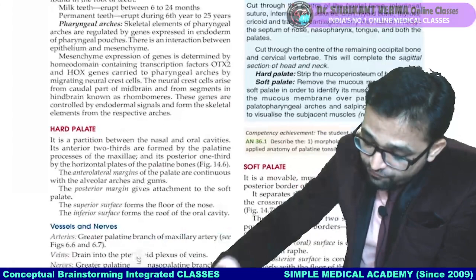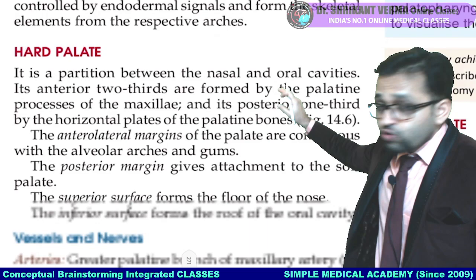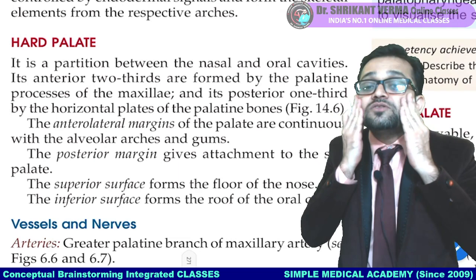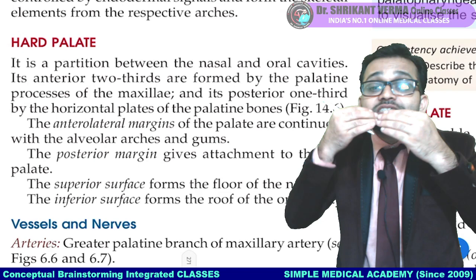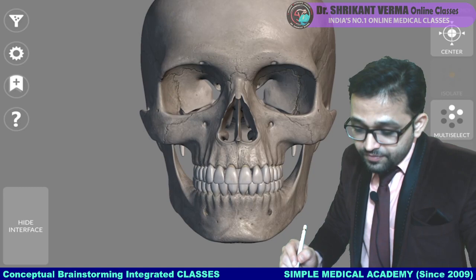We started hard palate — it is a partition between nasal and oral cavity. It has two parts: anterior two-thirds and posterior one-third. The anterior two-thirds is formed by the maxilla. So here is the palate — this is the maxilla bone, and the maxilla bone forms the anterior two-thirds. The posterior one-third is from a different bone.